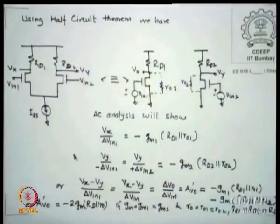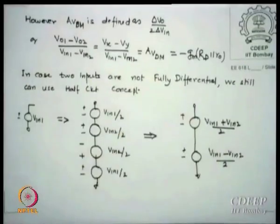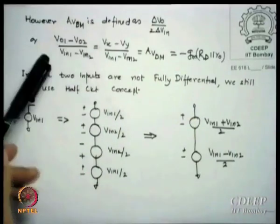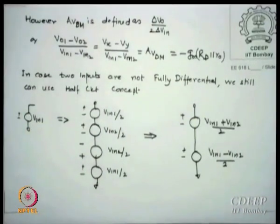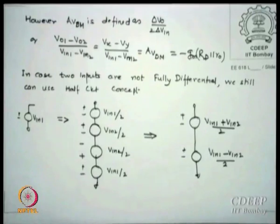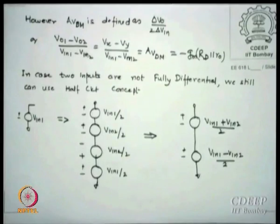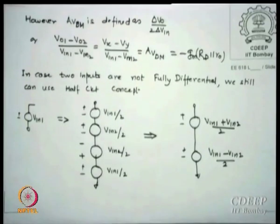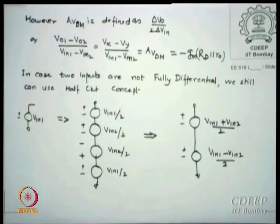In the region of VOV the circuit is linear and devices are in saturation. The difference gain, defined as (Vo1 minus Vo2) divided by (Vn1 minus Vn2), which is called AV difference mode, becomes gm times (RD parallel R0) — the factor of 2 goes away. However, our definitions so far assumed Vn1 and Vn2 are differential, meaning if one changes by plus delta, the other goes down by delta.